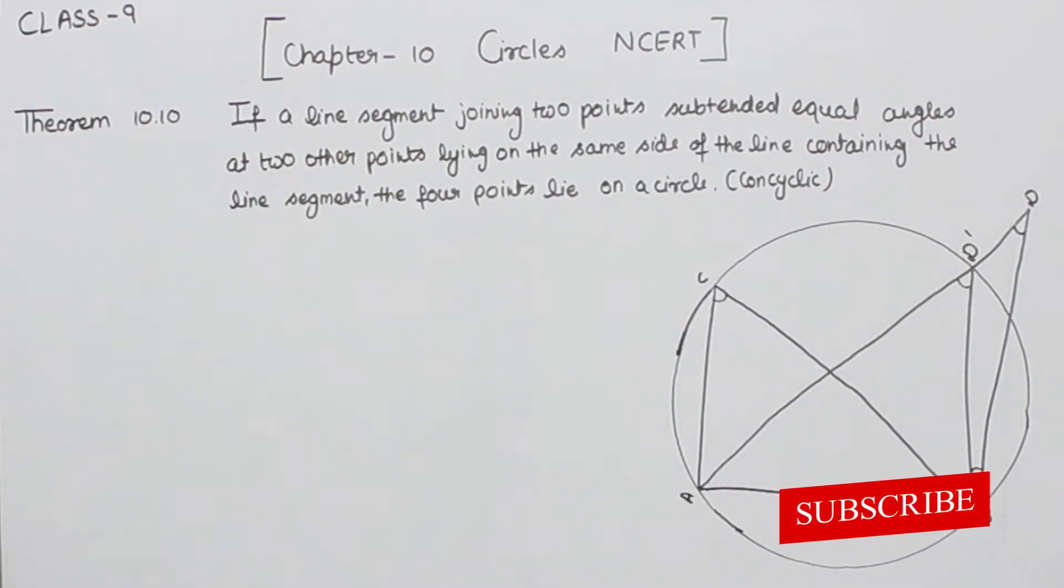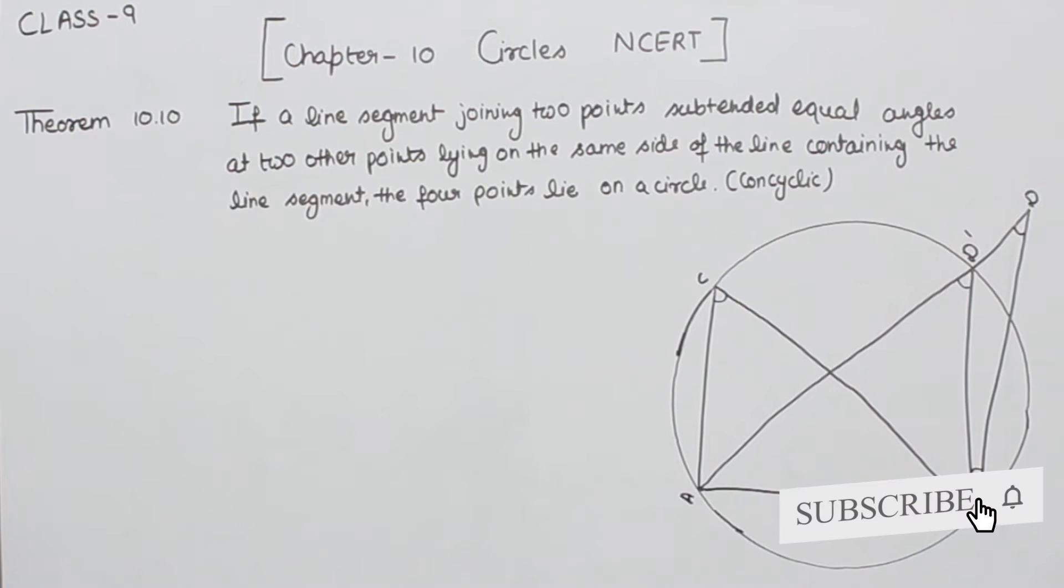If a line segment joining two points subtends equal angles at two other points lying on the same side of the line containing the line segment, the four points lie on a circle. That means concyclic.